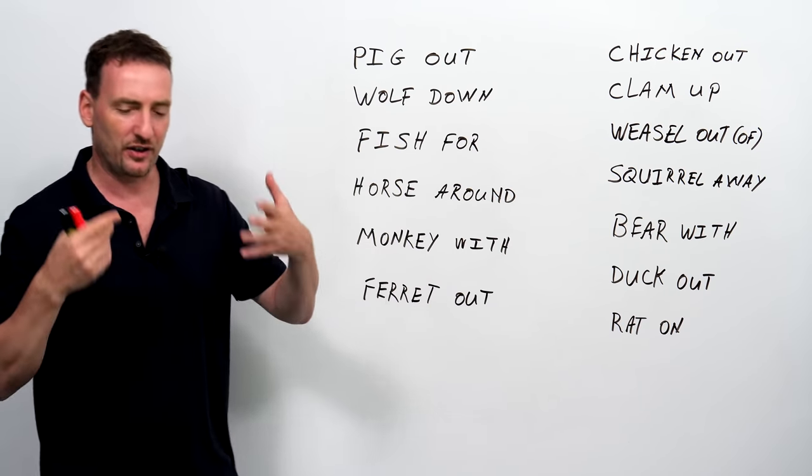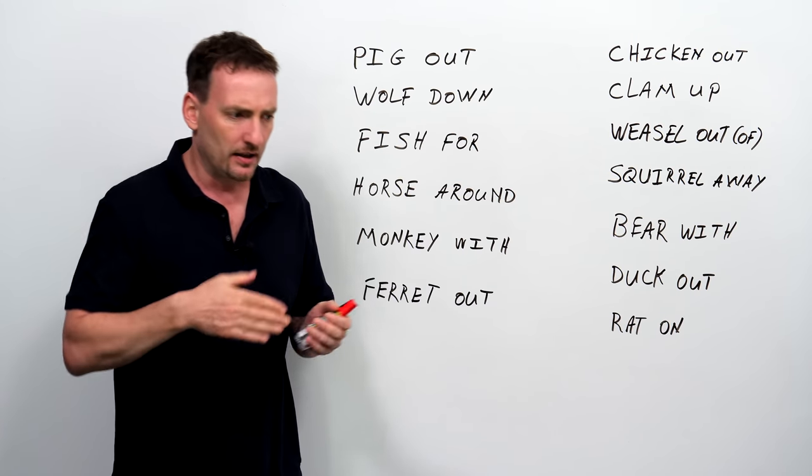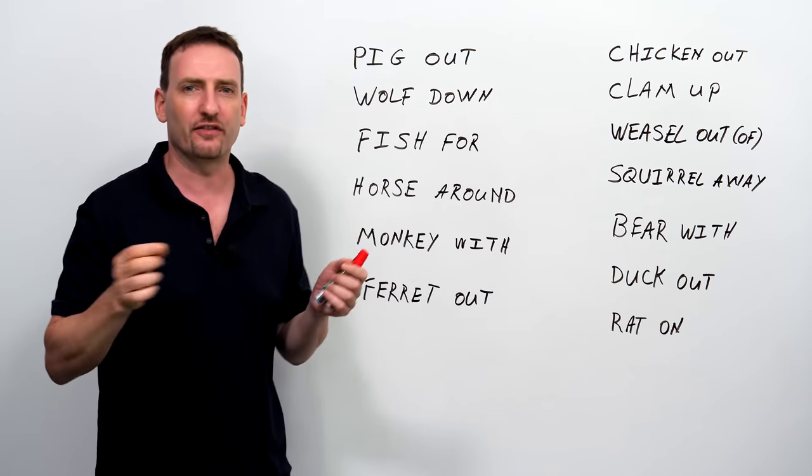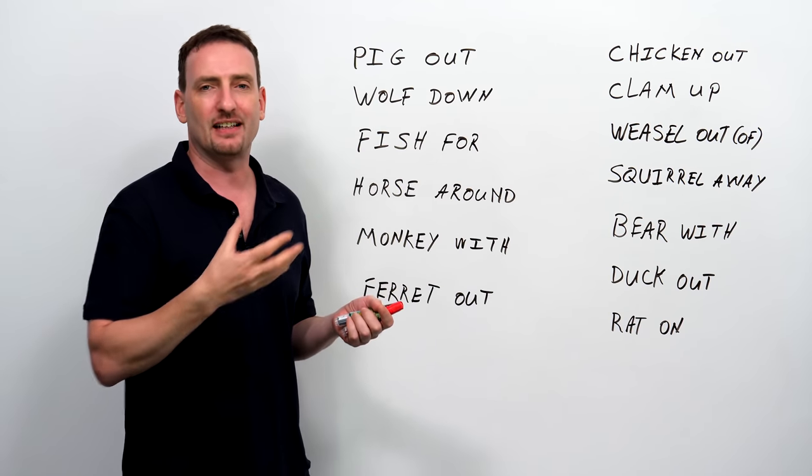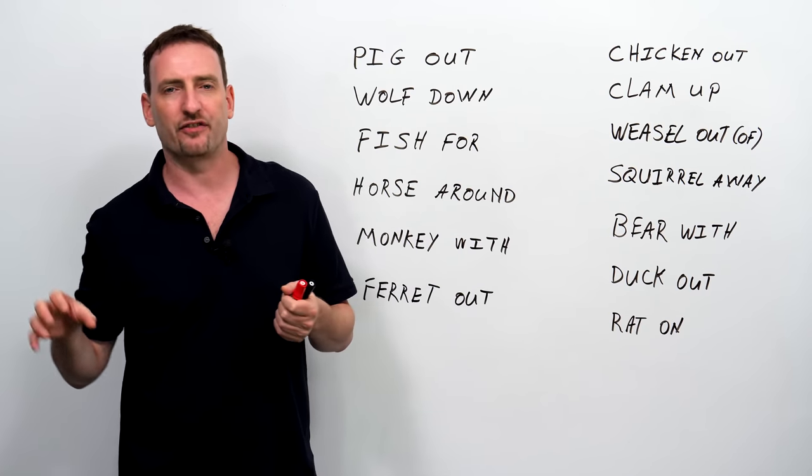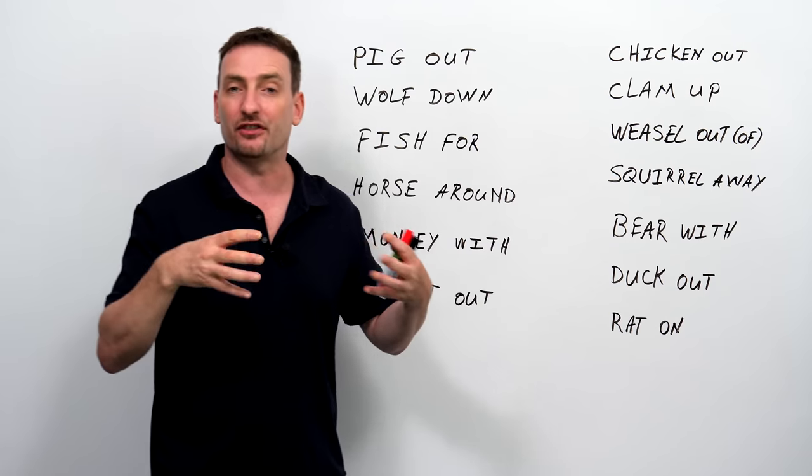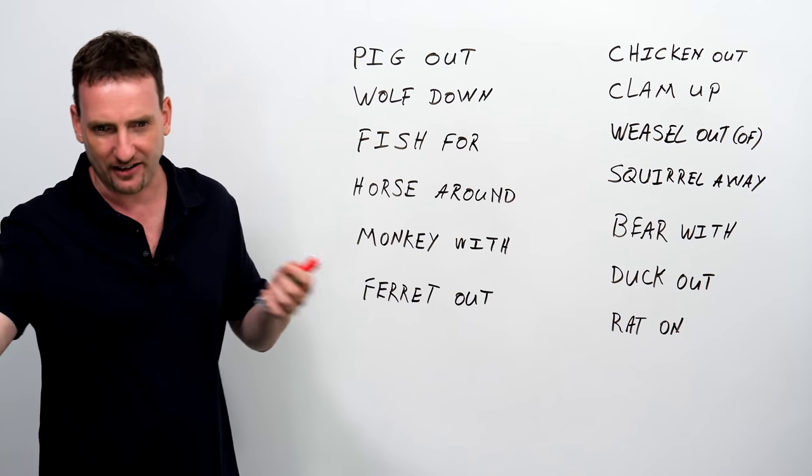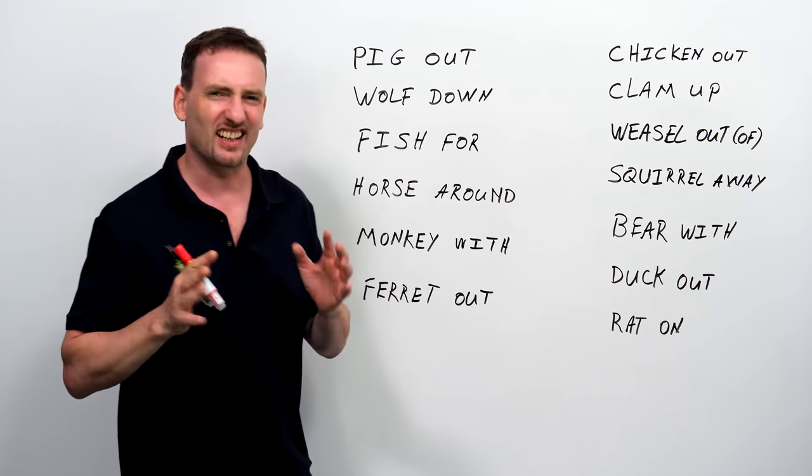If you ferret out something, if you've ever seen a ferret in action, like a real ferret, they go into every little corner looking for stuff, looking for food, looking for something. So, if you ferret something out, it means you discover. You ferret out the information, you ferret out the secret, you ferret out something. You discover something, like a little ferret that goes everywhere. They're kind of cute, but not that much fun.